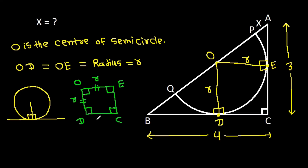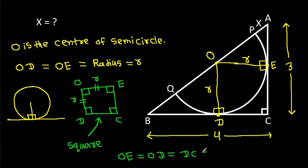We have OE equal to OD, that is R. That means ODCE will be a square. So OD equals DC equals CE equals R. Therefore DC will be R and CE will be R.